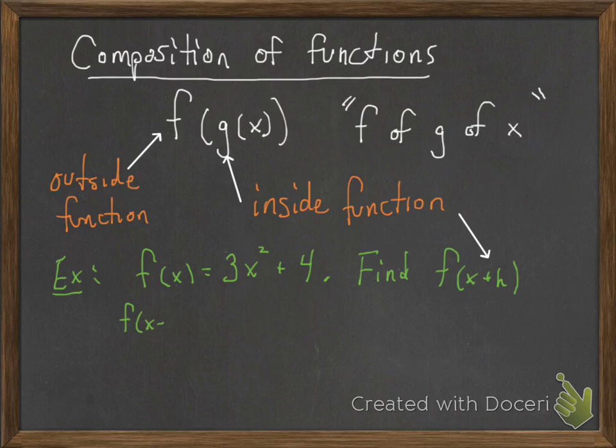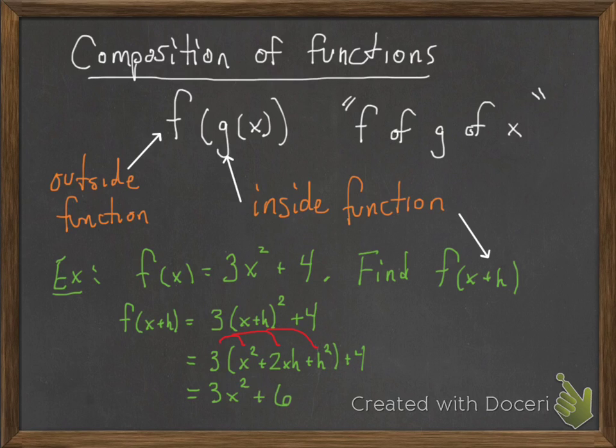So here's how you do it. f of x plus 1 just means plug in x plus 1 everywhere you see an x. And then you simplify it by foiling everything out, and then distributing the 3, and there you have it. There's your answer.